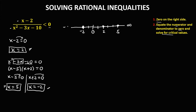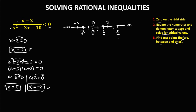Now we find the test points — numbers in each interval. Before the first critical value negative 2, we choose negative 3. Between negative 2 and positive 2, we choose 0. Between positive 2 and positive 5, we choose positive 3. And after positive 5, we choose positive 6.